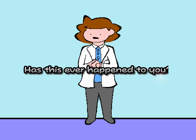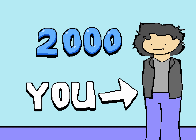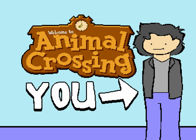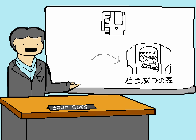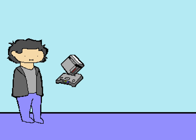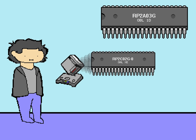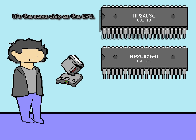Has this ever happened to you? It's the year 2000 and you're on the development staff of a game called Animal Crossing. Your boss says, we want to be able to play NES games inside Animal Crossing. That would be really cool. You've been hired to make NES games run on the Nintendo 64. You need to learn how the CPU works, how the picture processing unit works, and also how the audio processing unit works.